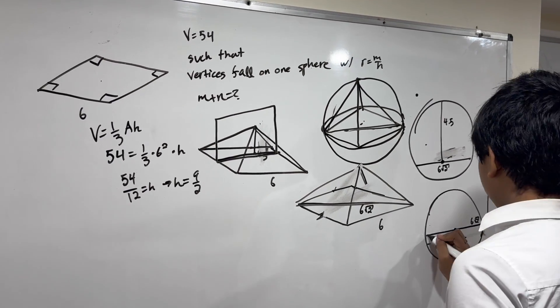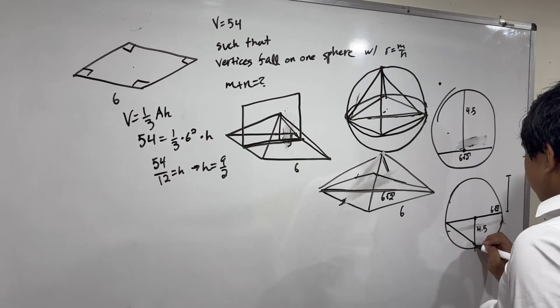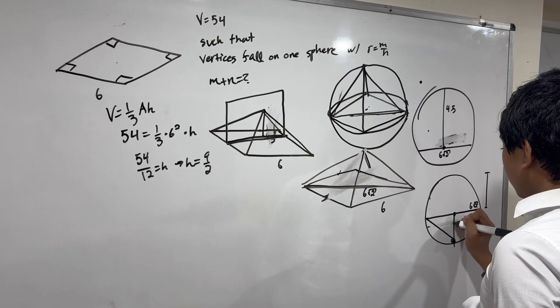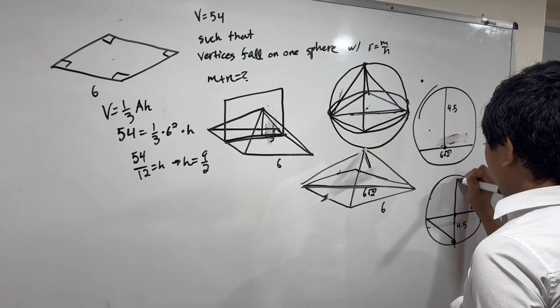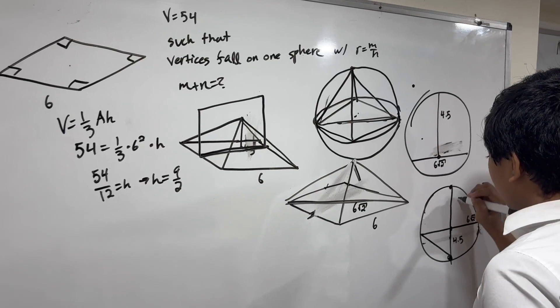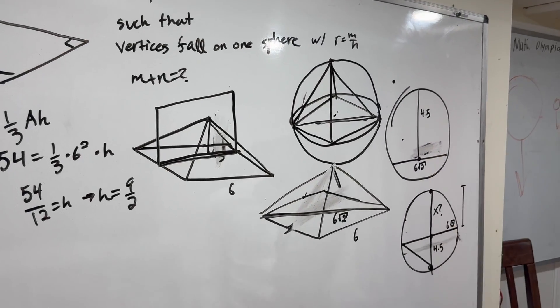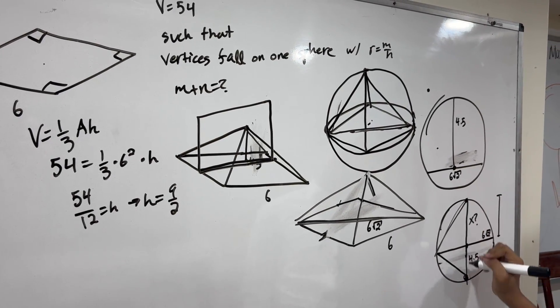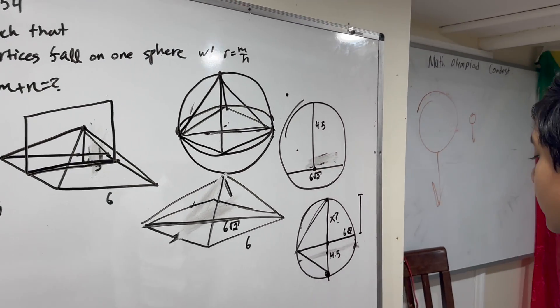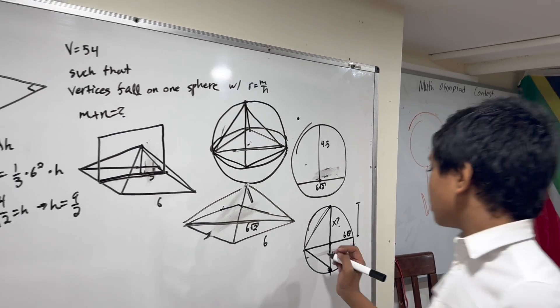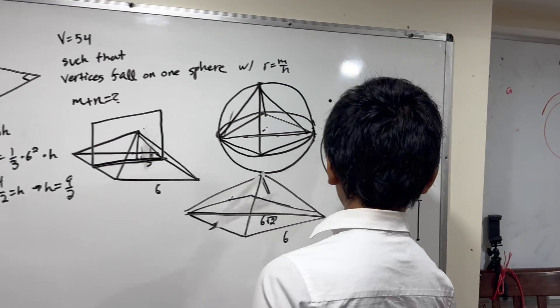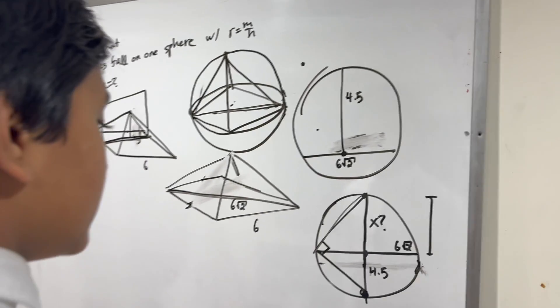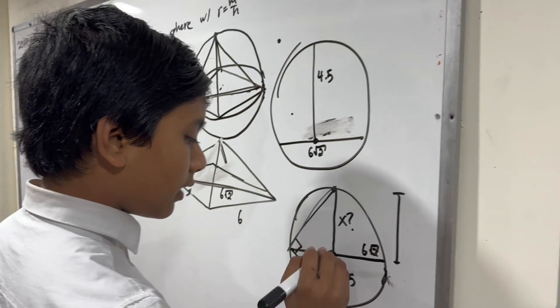And how do we find that? Well, it's pretty easy. By Thales' theorem, we know if we extend this line, this is an unknown that we need. This right here is a right triangle because the hypotenuse is the diameter of the circle.